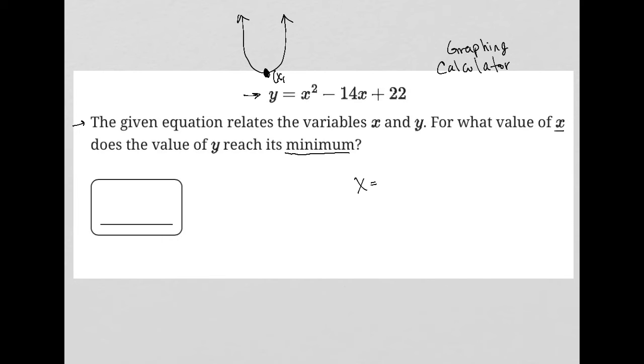That vertex, of course, has an x and y value. To find the x value of the vertex for a parabola, it will always be negative b over 2a.